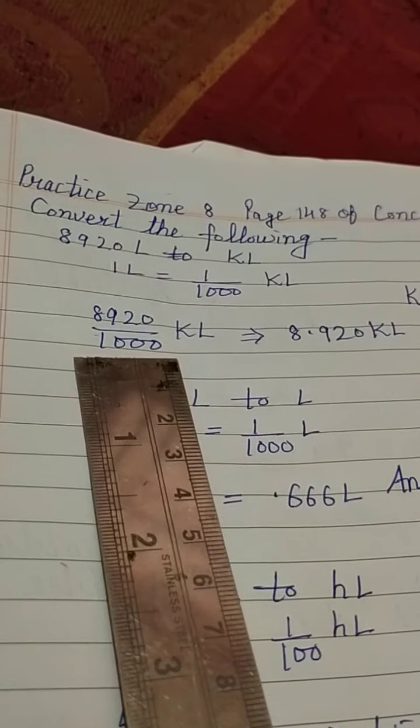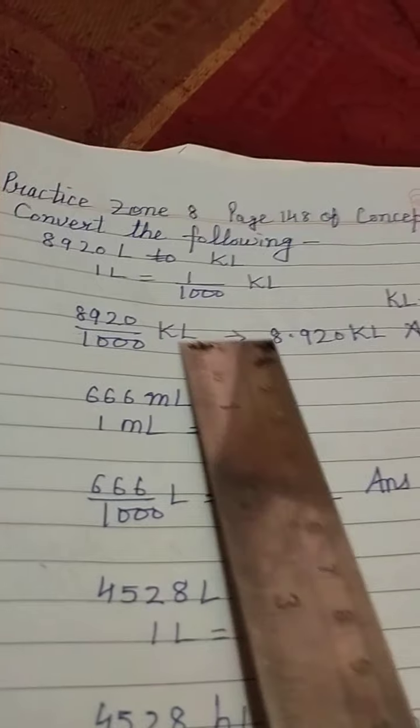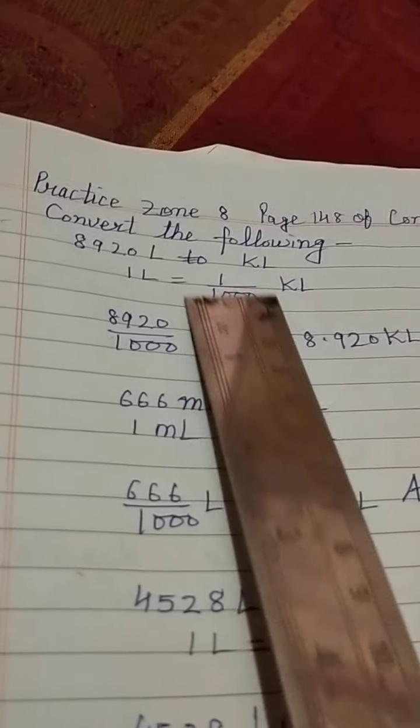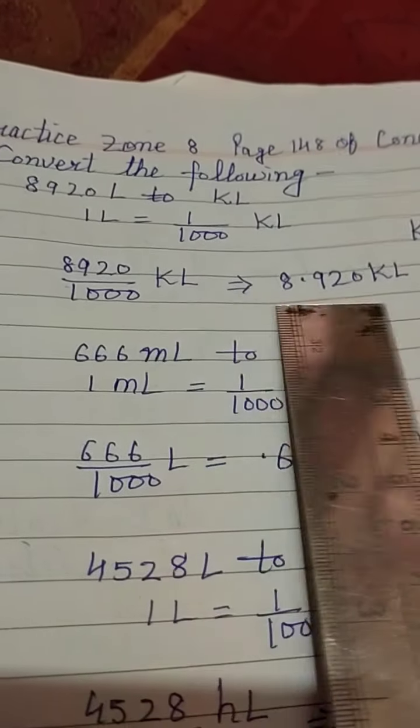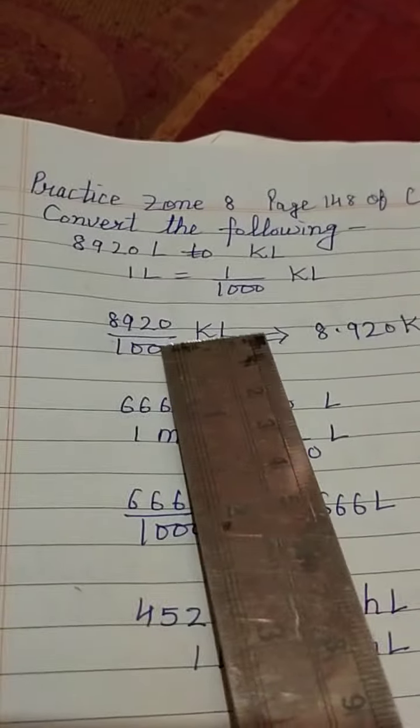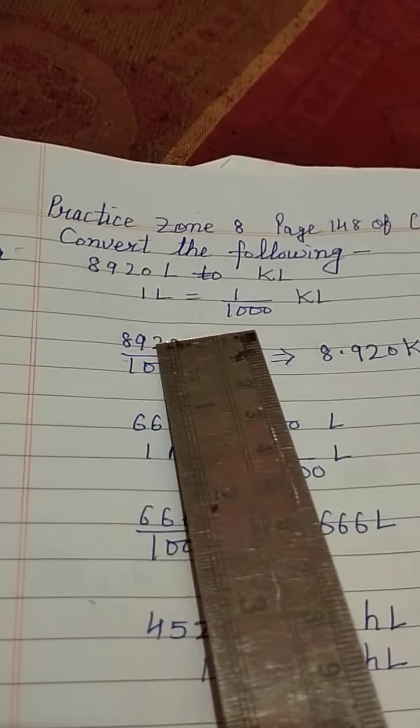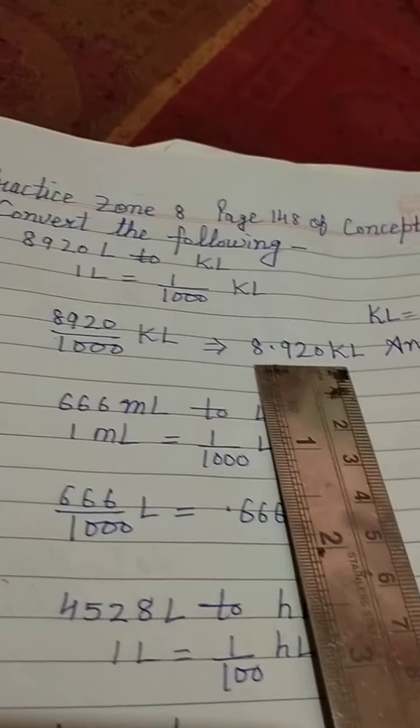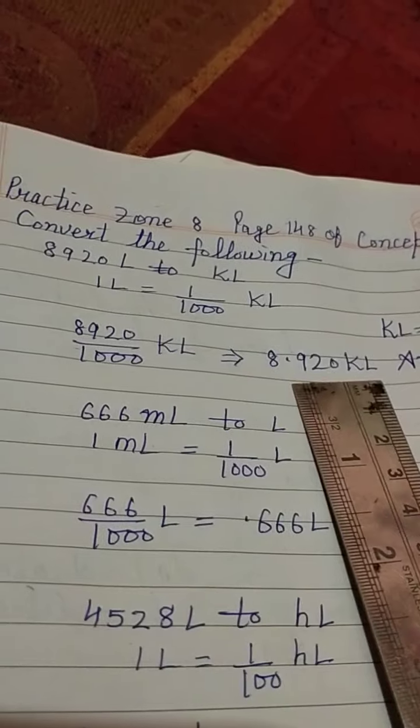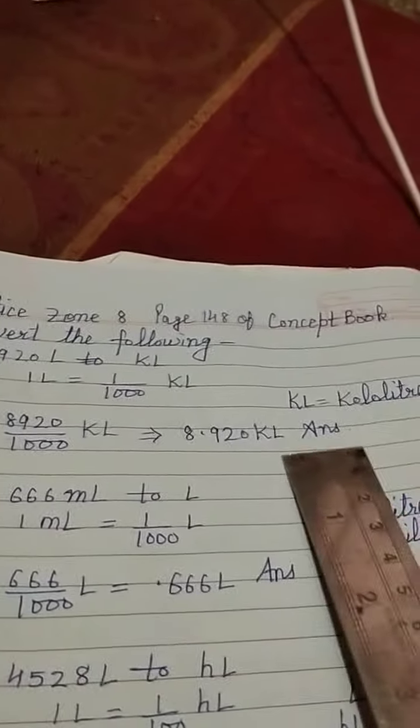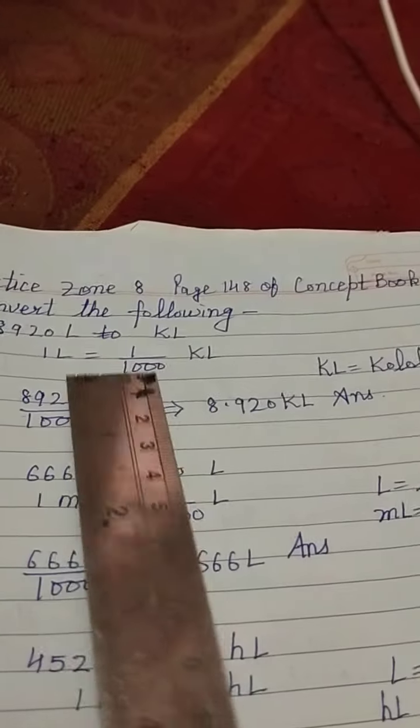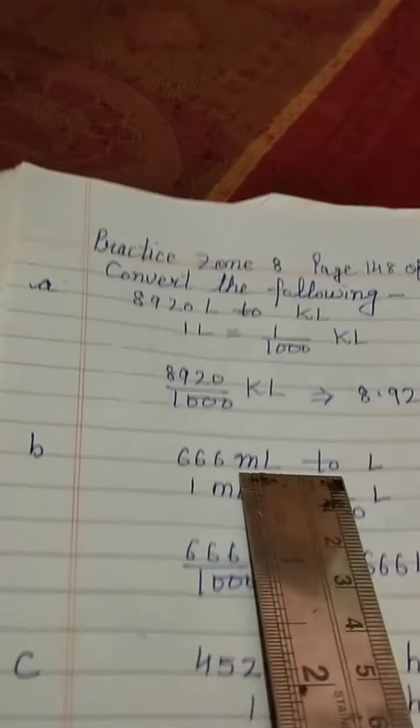Divided by 1000. In place of this litre we have to write 1 by 1000 kilolitre. So when we write like this, 3 zeros are here, we will use decimal. So 3 zeros means 3 digits: 1, 2, 3, 8 decimal 920 kilolitre. Next is KL means kilolitre and L means this capital L means litre.